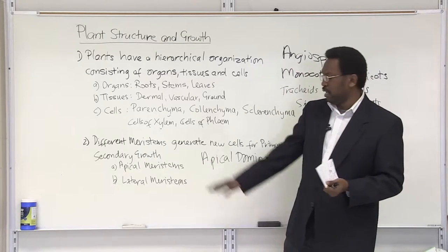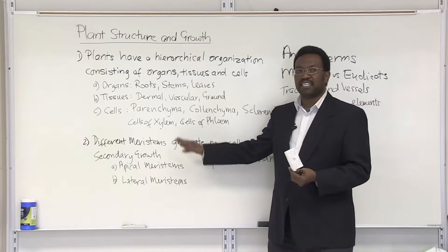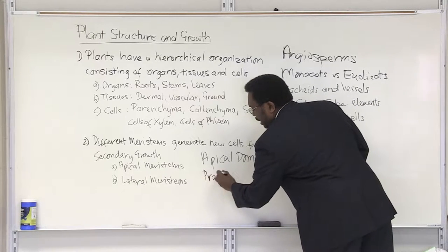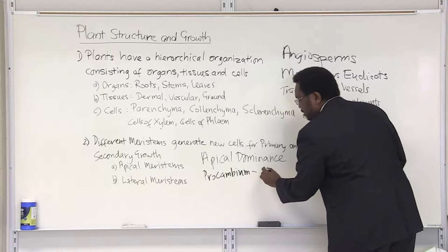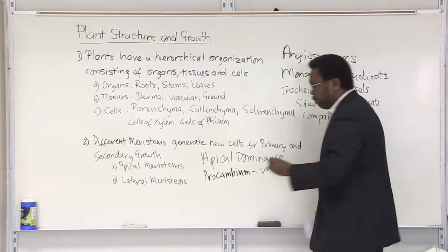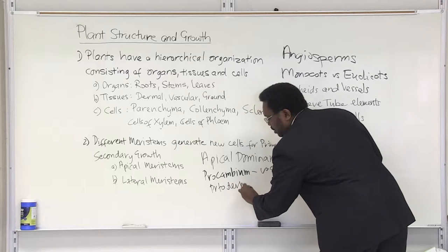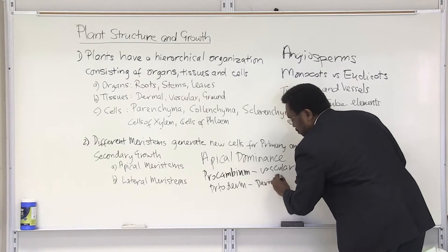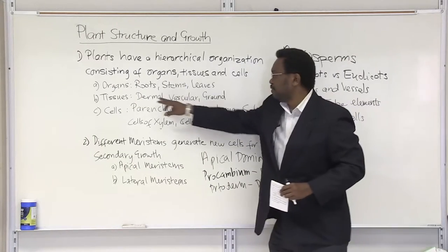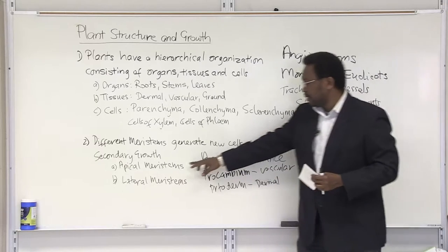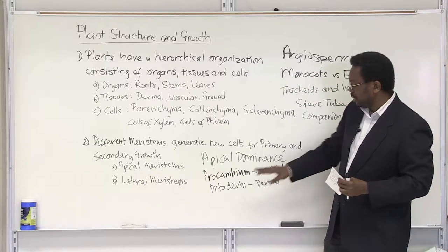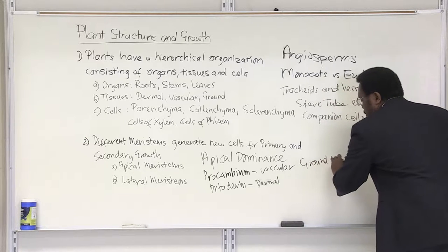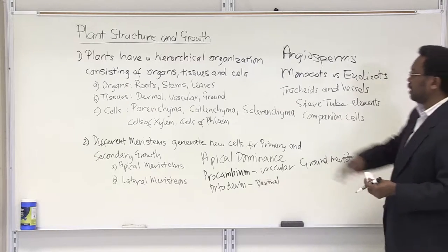Different types of apical meristem are responsible for the different types of tissues that plants generate. The three types of apical meristem you need to note are: procambium, which gives rise to vascular tissue; protoderm, which gives rise to dermal tissue; and ground meristem, which gives rise to ground tissue. Remember there are three tissue types: dermal, vascular, and ground.